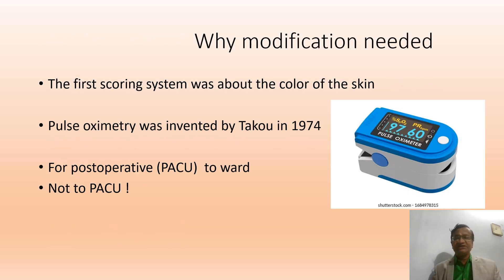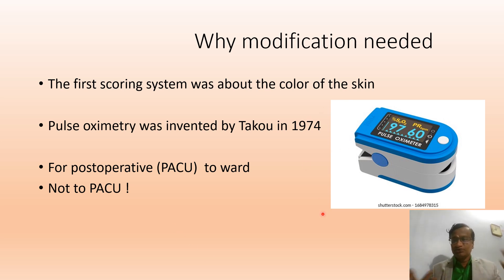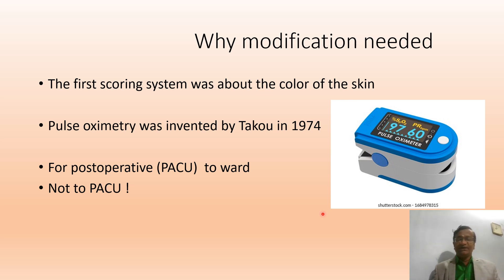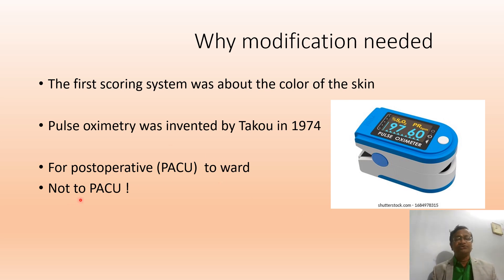Modification was needed because the pulse oximeter was invented in 1974. In 1970, there was no pulse oximeter, so the original scoring system used the color of the patient's skin. After 1974, when the oximeter was invented, he needed to modify the score to better reflect post-operative patient assessment for transfer to ward — that is what the modified Aldrich scoring system is about.